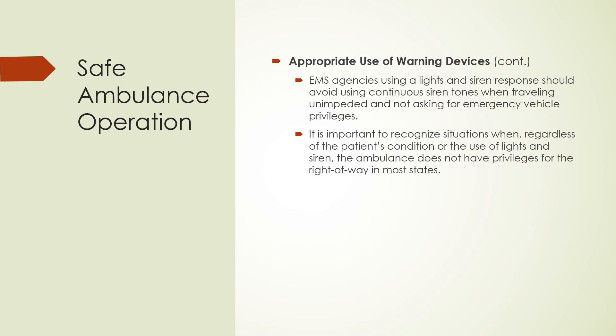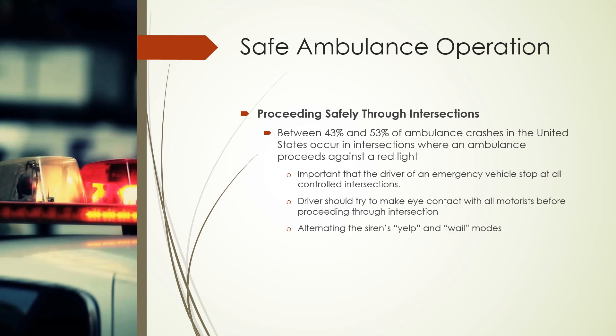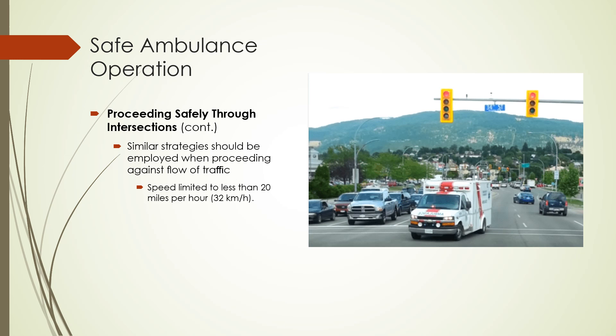Use proper siren tones — playing DJ with random siren changes is annoying unless someone isn't paying attention or you're approaching a dangerous intersection. Between 43 and 53 percent of ambulance crashes in the United States occur at intersections where an ambulance proceeds against a red light. My own ambulance was T-boned at an intersection — driver looked left and right, slowly proceeded, and we got hit. That's where most accidents happen, which is why running lights and sirens carefully at intersections is so critical.